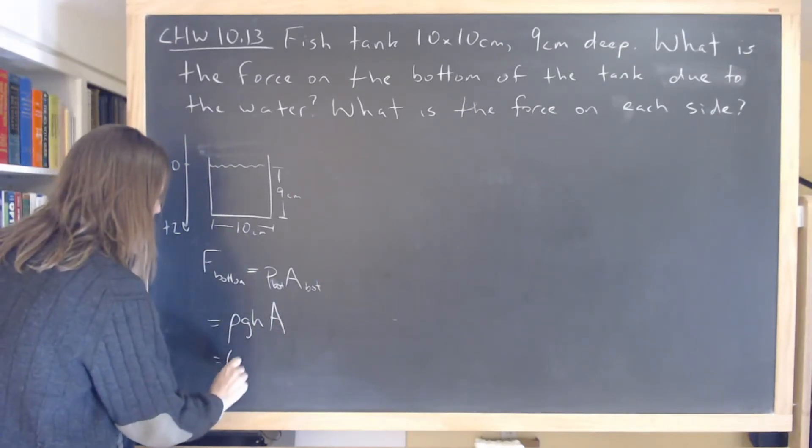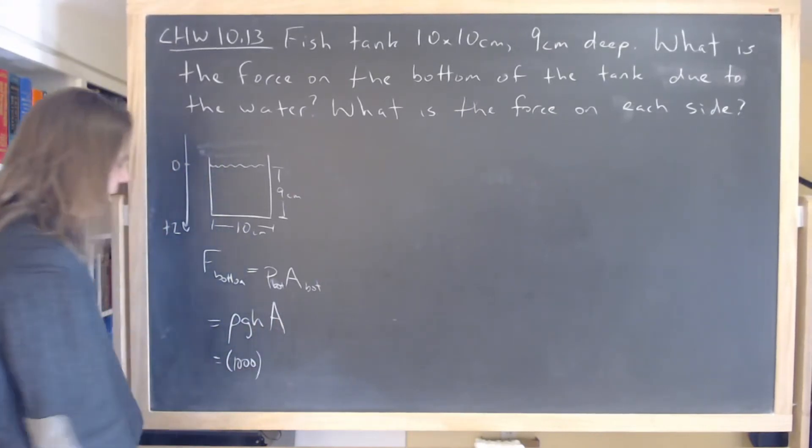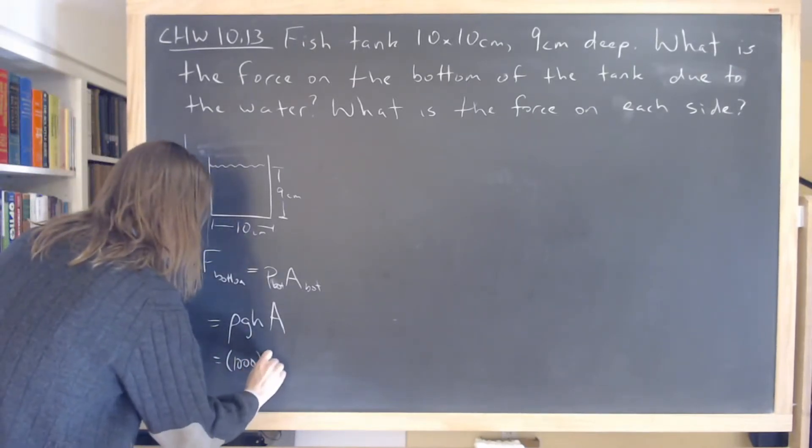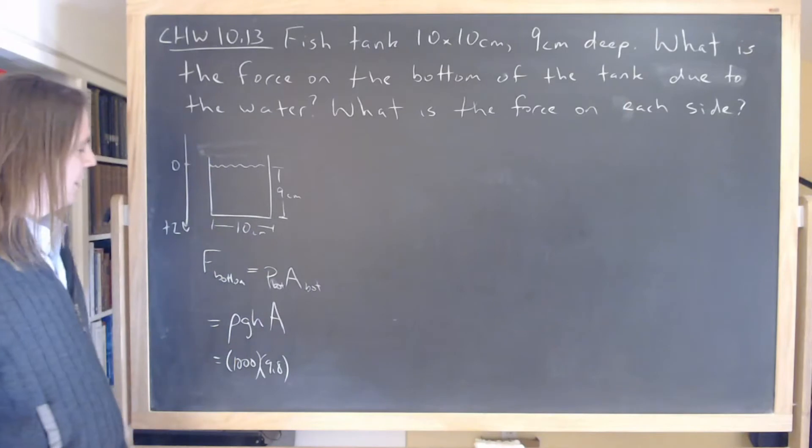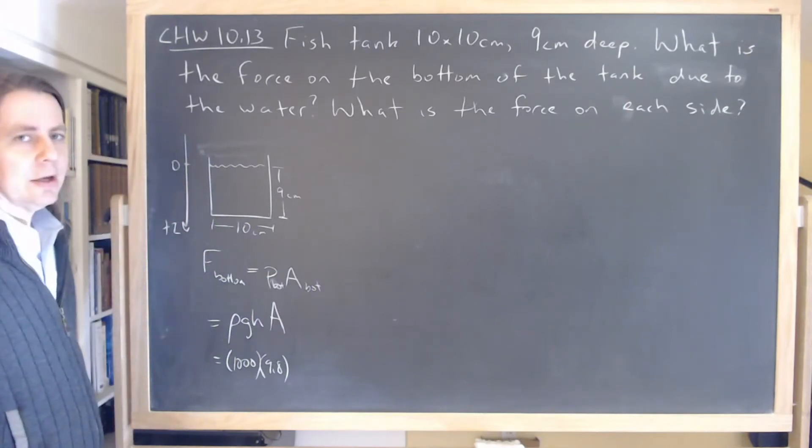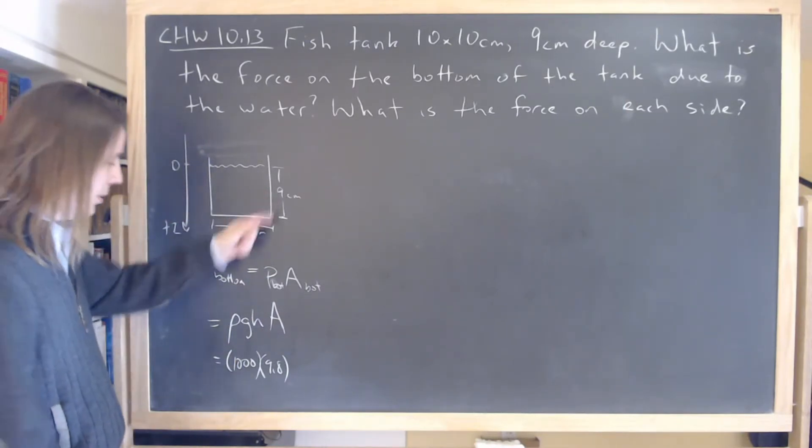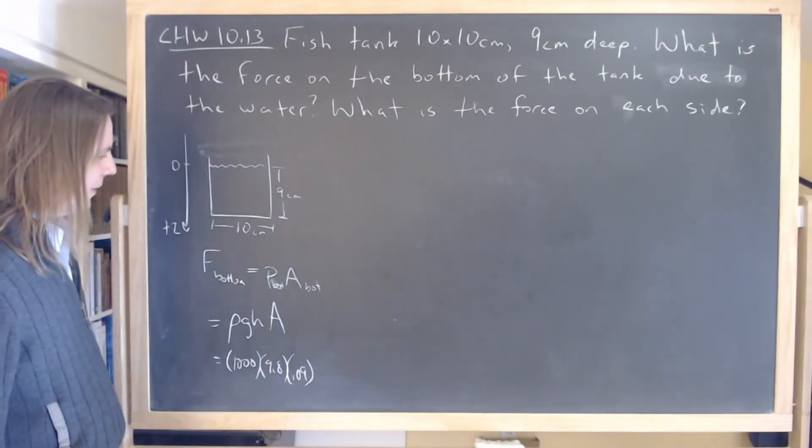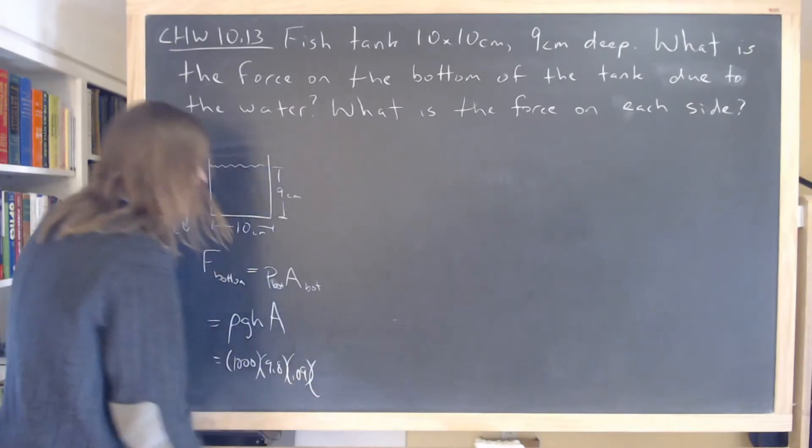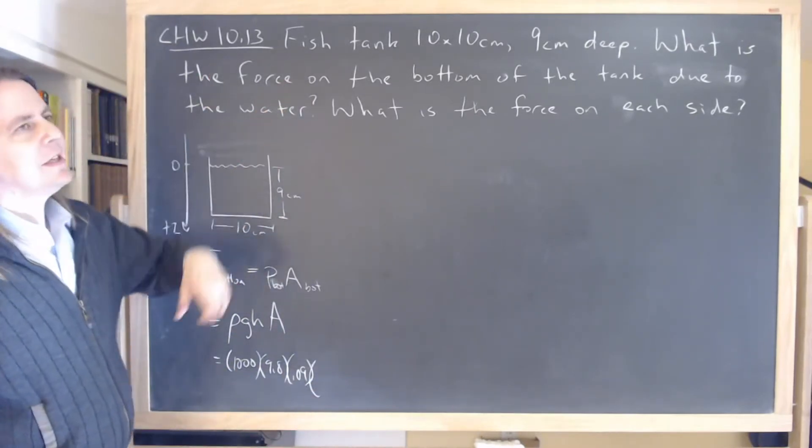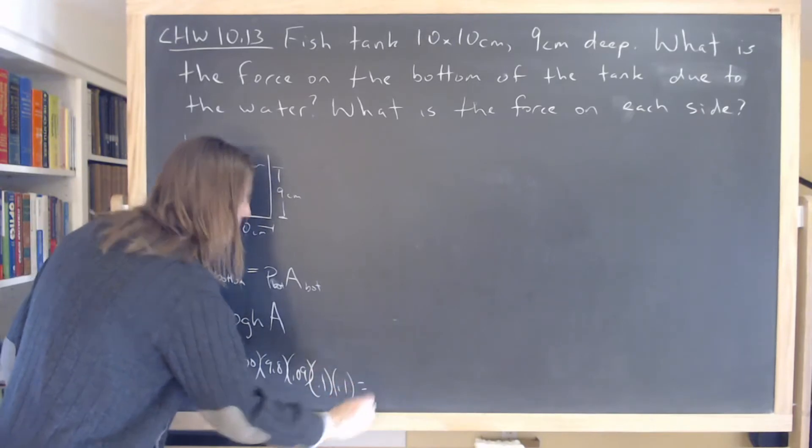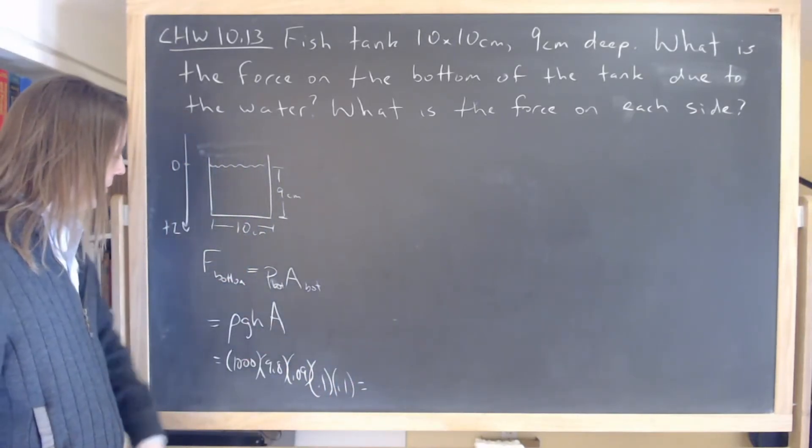So let's put some numbers in those. 1,000 in MKS units is the density of water. G is of course 9.8. The height in terms of MKS units is 0.09. We're getting the pressure all the way at the bottom. And then the area is 10 by 10 in meters. That's 0.1 times 0.1.